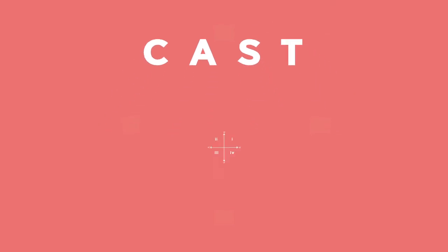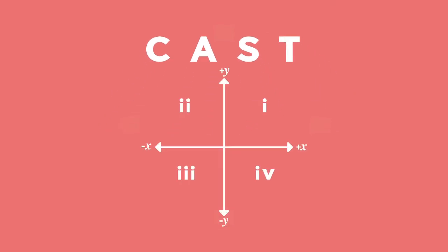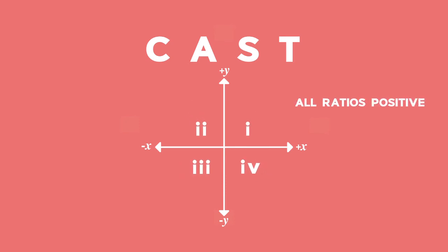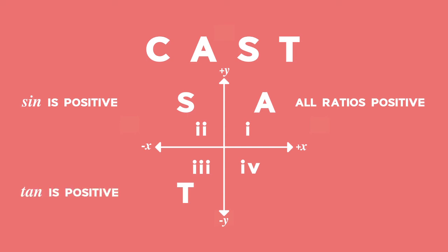Using the letters C, A, S, and T we can indicate which of the ratios are positive in each quadrant. As all the ratios are positive in the first quadrant, we will use the letter A to indicate the ratios are positive. S for the second quadrant as sin is positive in the second quadrant. T for the third quadrant as tan is positive in the third quadrant. And C for the fourth quadrant as cos is positive in the fourth quadrant.